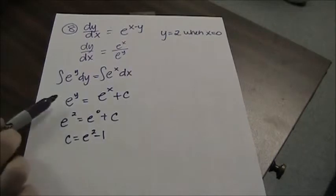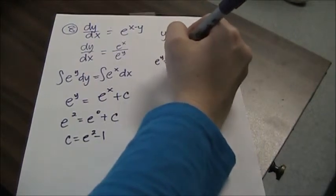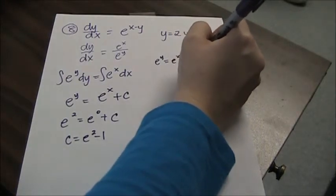And then plugging that into my general solution will give me the particular solution, e to the y equals e to the x plus e squared minus 1.